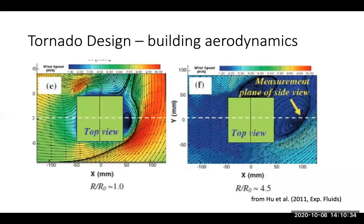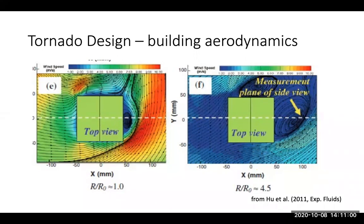We do know some things. This is an image from one of the papers from Partha Sarkar's group — he did some really nice PIV measurements around buildings. In the image on the left, the tornado is relatively close to the building. You can see the stagnation point is on the leftward face. Looking at the streamlines, the curvature is really changing the leeward walls, and the direction of the stagnation point and the flow in the wake are not aligned. So the horizontal loads are clearly changing in this kind of case.